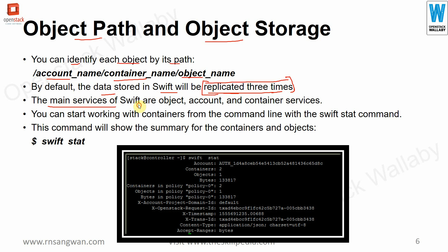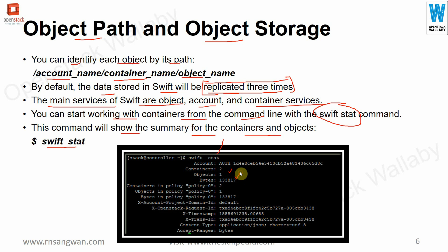The main services of SWIFT are object, account, and container services. You can start working with containers from the command line using the `swift stat` command. When you run `swift stat`, it shows a summary of your containers and objects — how many you have, the size stored, and the policies about those containers and objects.